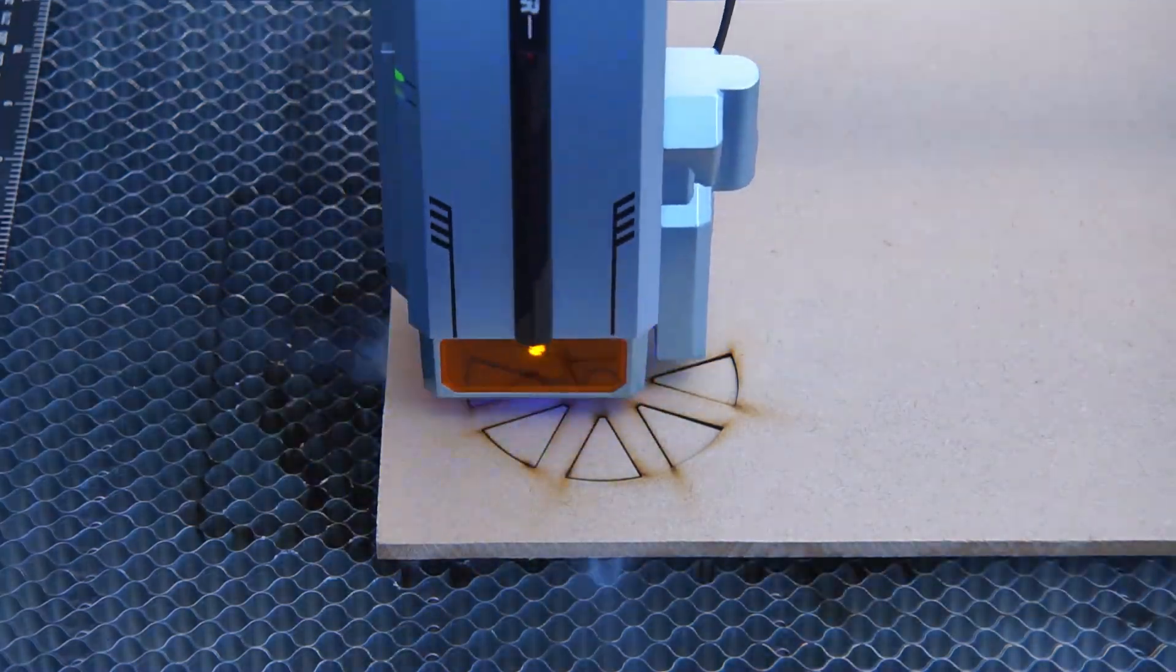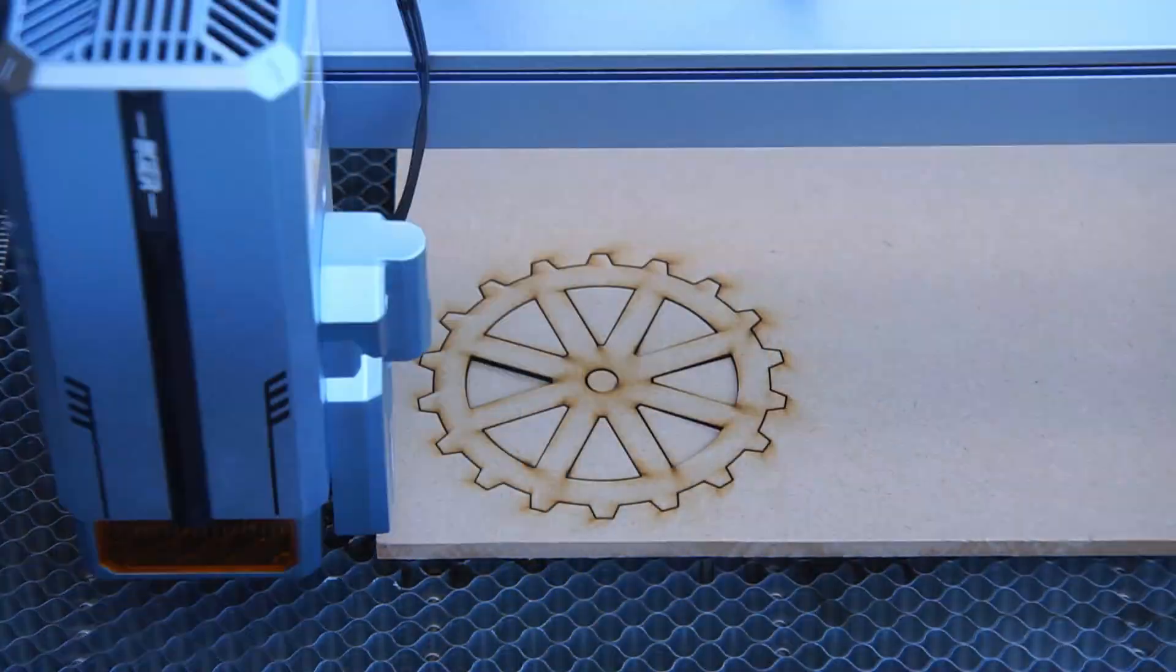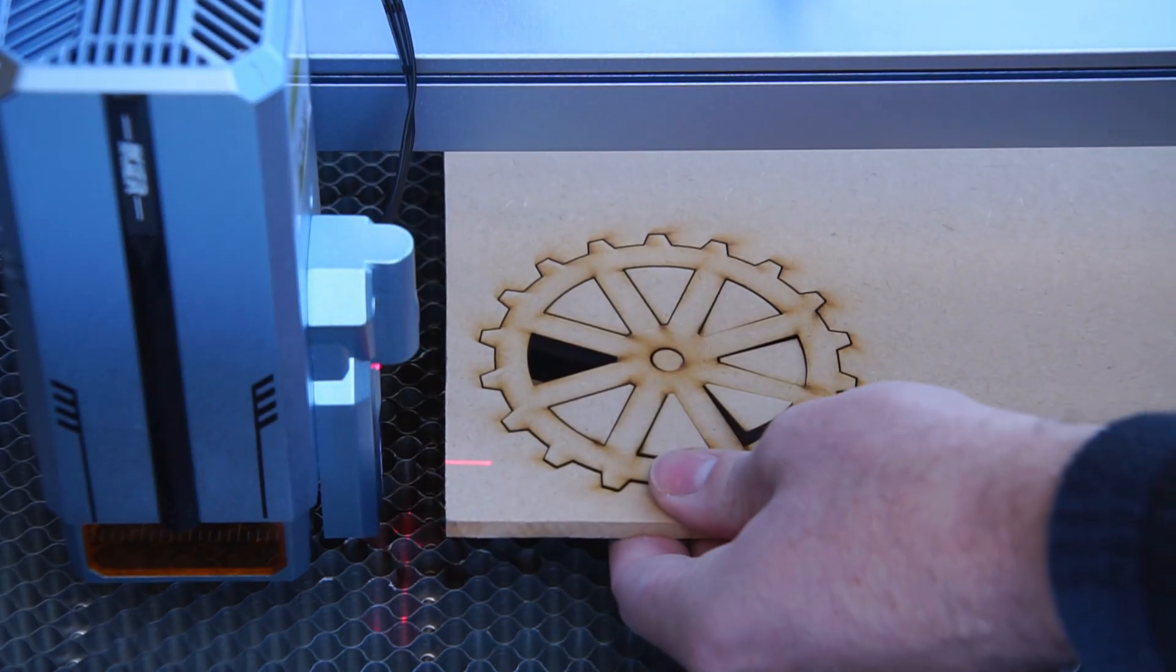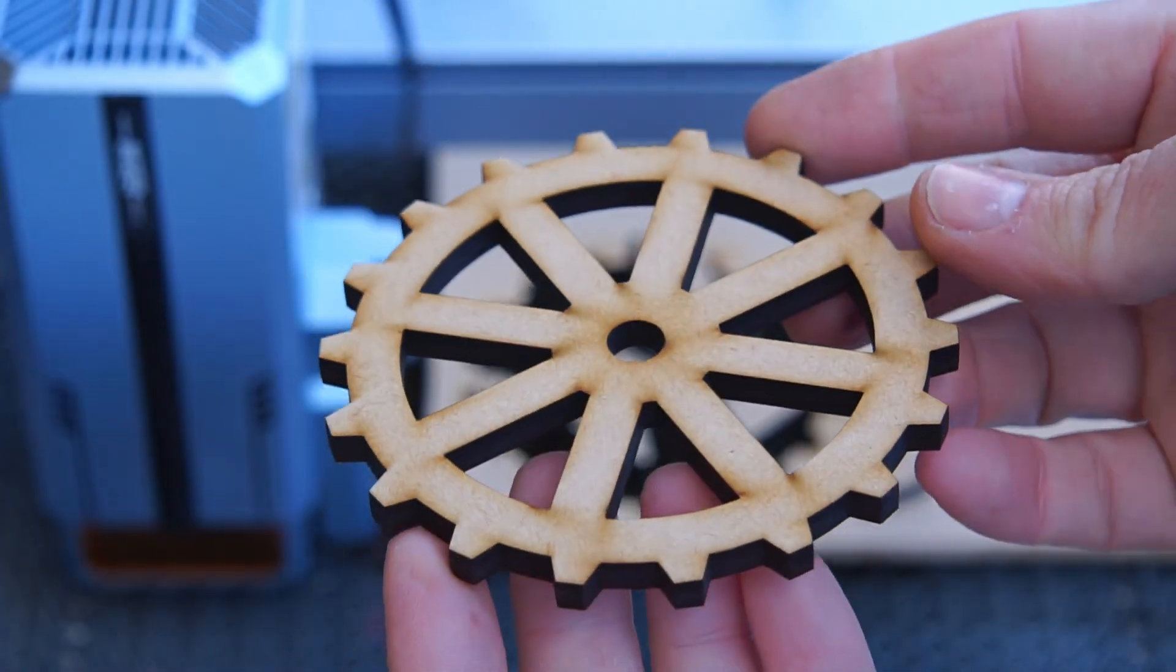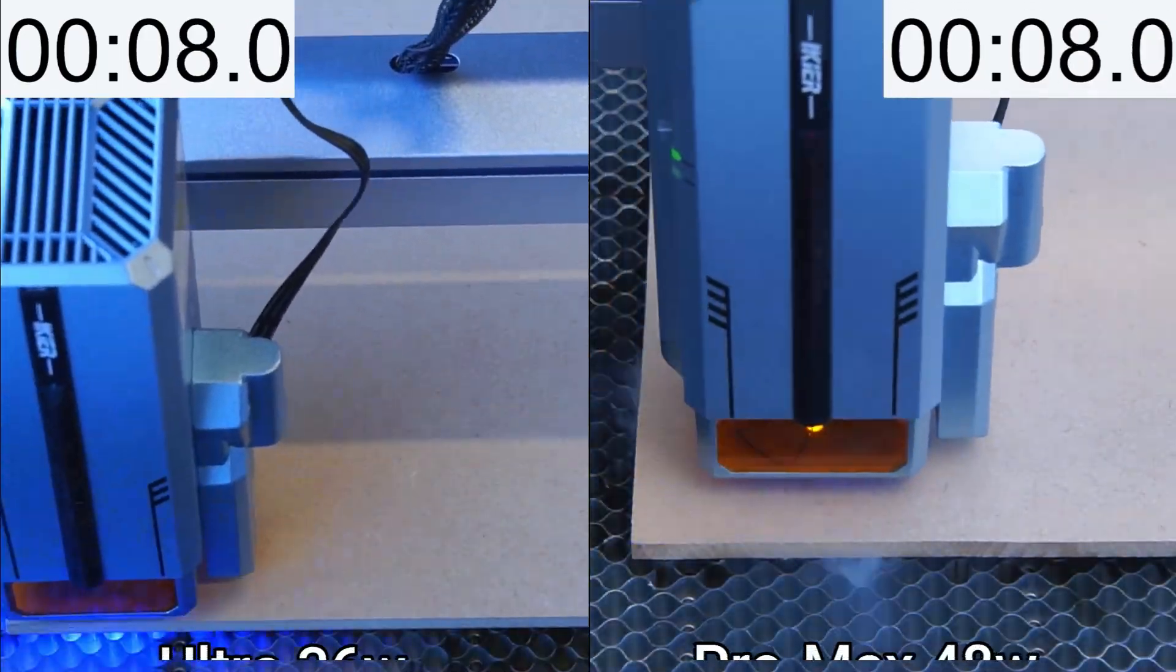Let's put the rest of these settings to use by cutting out a model gear from an MDF sheet. The total cut time was 2 minutes 18 seconds. The edges were crisp and well defined.